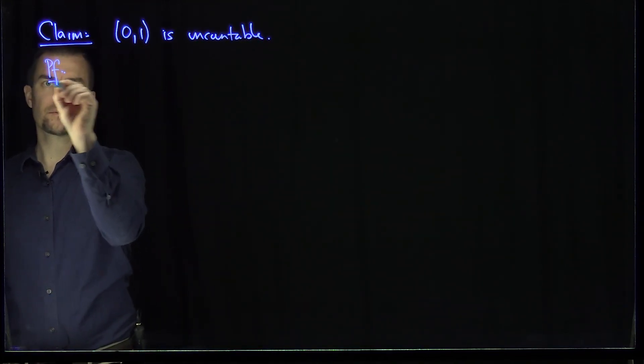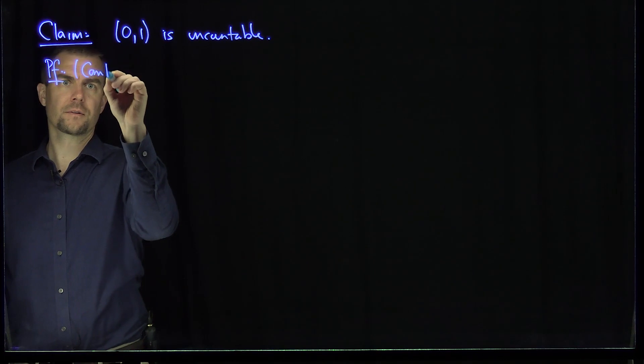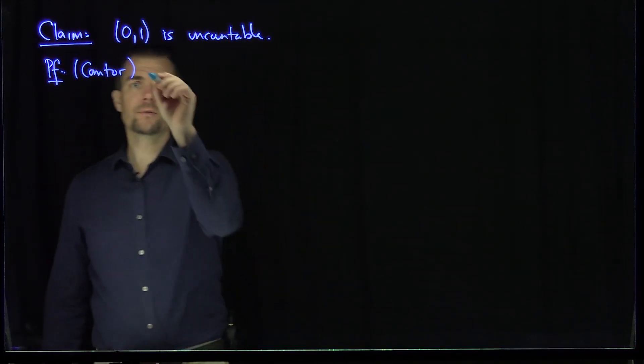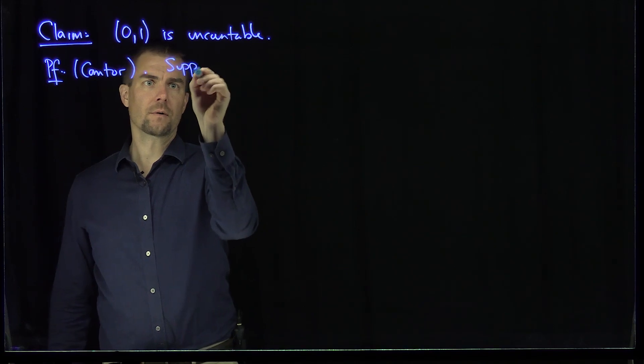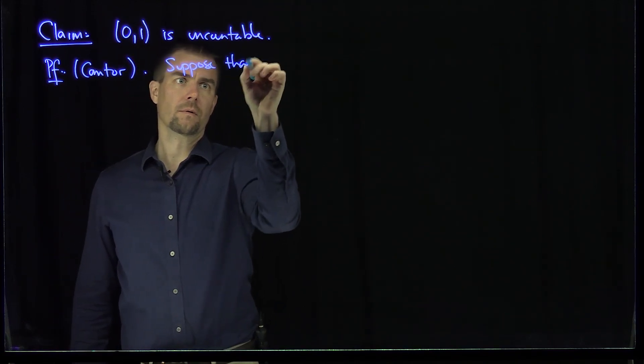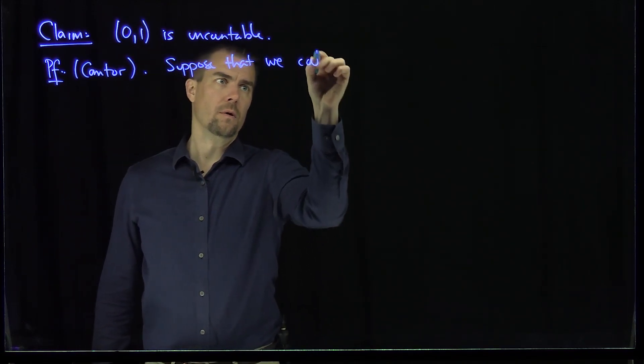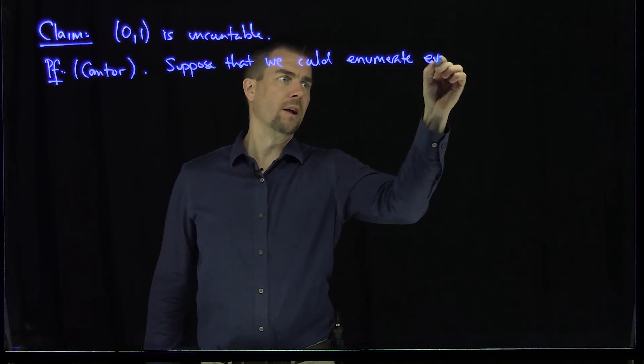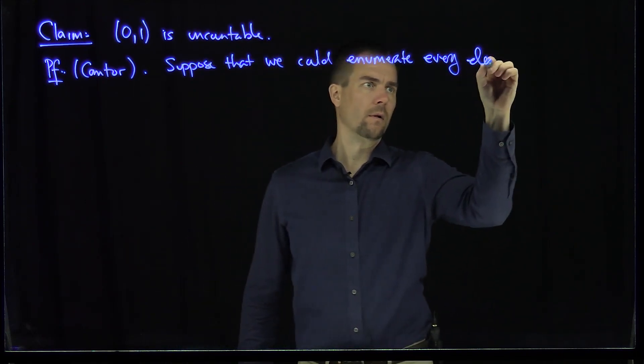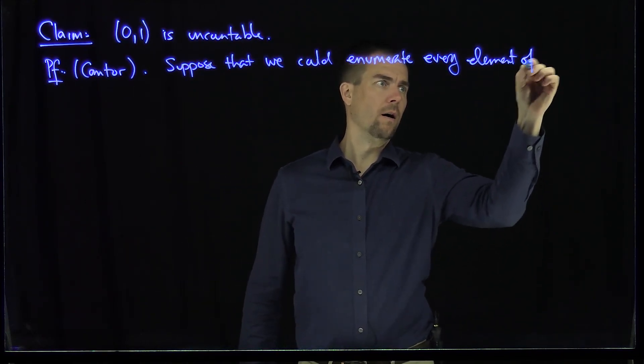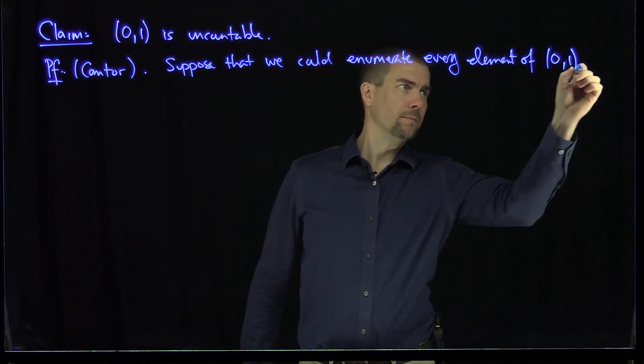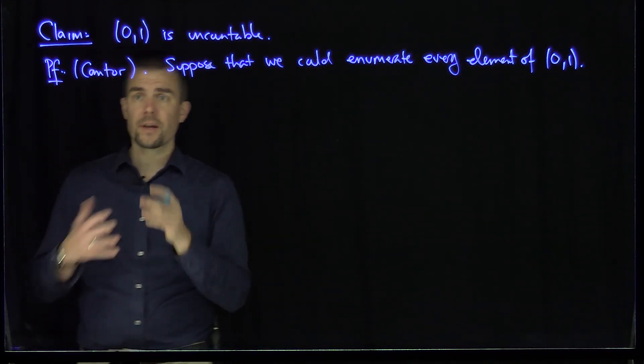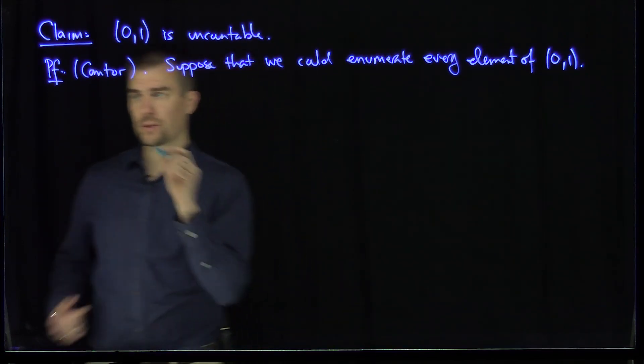This is the proof that's due to Cantor. The idea is that if there was a bijection, suppose we could enumerate every element of the interval 0 to 1.